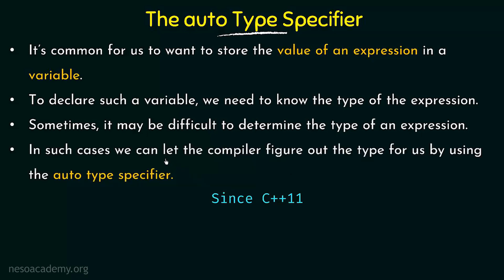In such cases we can let the compiler figure out the type for us by using the auto type specifier. This auto type specifier helps by letting the compiler itself figure out what type it is by evaluating the expression. This is a feature that has been introduced since the C++11 standard, so in older standards prior to C++11 we may not have this feature.